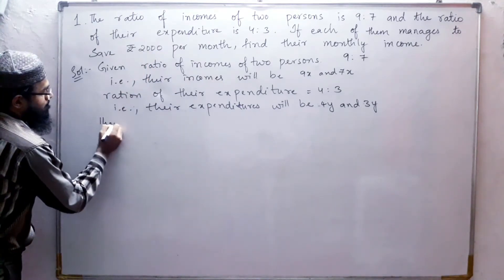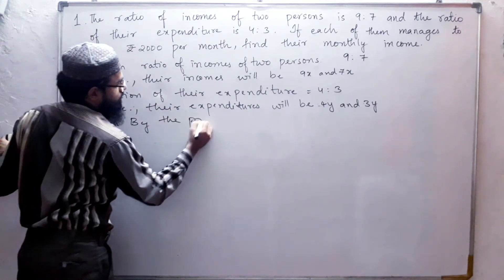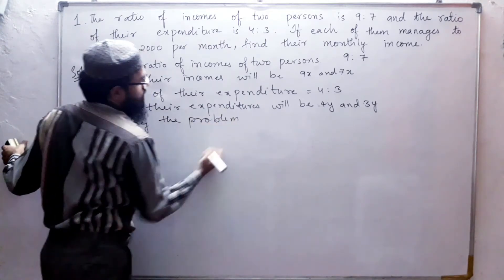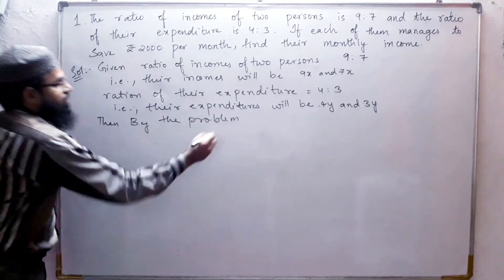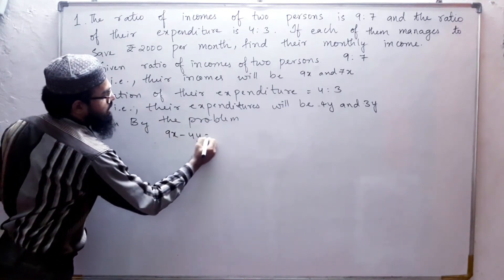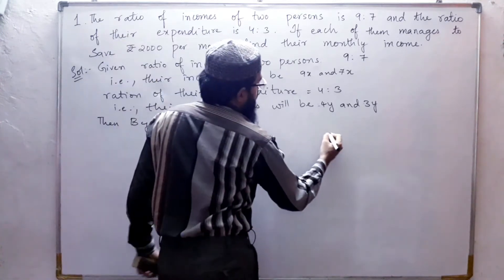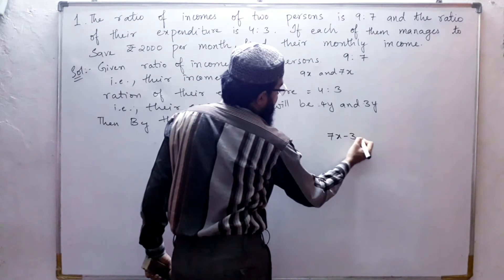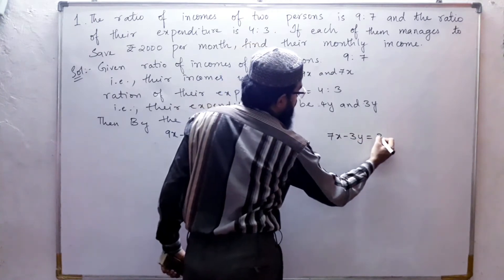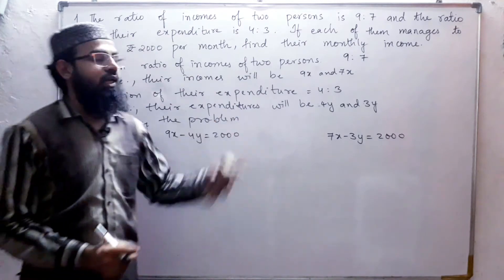Then by the problem, we can write 9x minus 4y equals 2000, and 7x minus 3y equals 2000. This is the first equation and second equation.